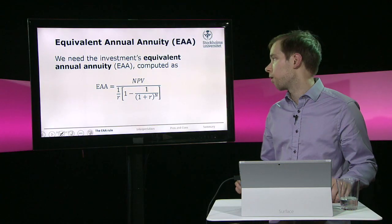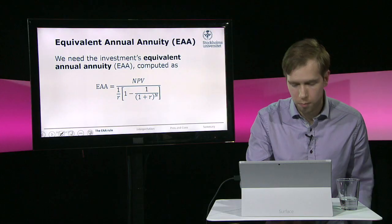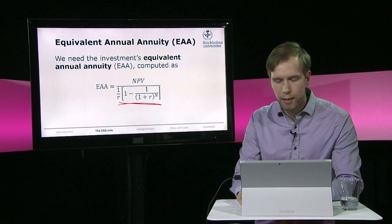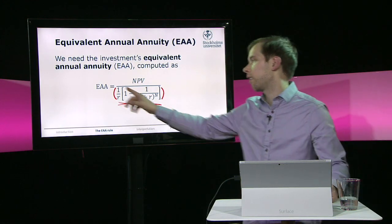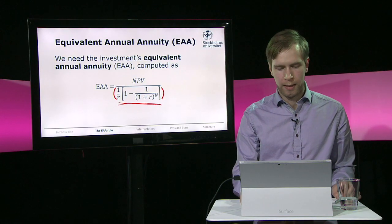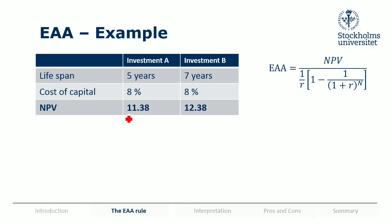We do it like this: we take the NPV and divide it by this big factor to get what is called an equivalent annual annuity. It's very important that you remember to have parentheses on the sides here — if you don't, it might be wrong when you hit it into your calculator or your computer. So let's apply this to the example we had.